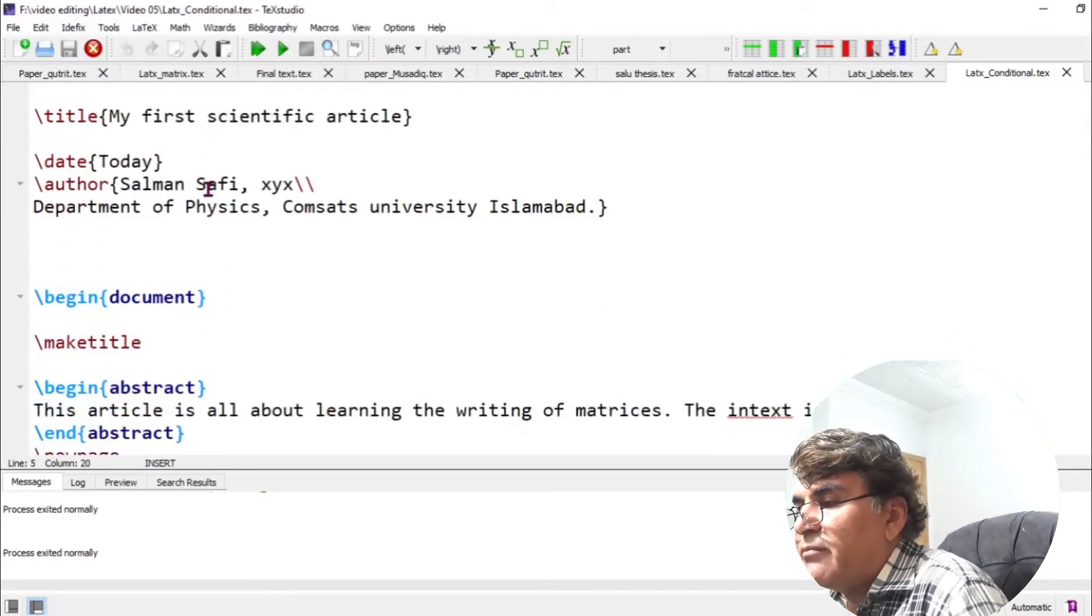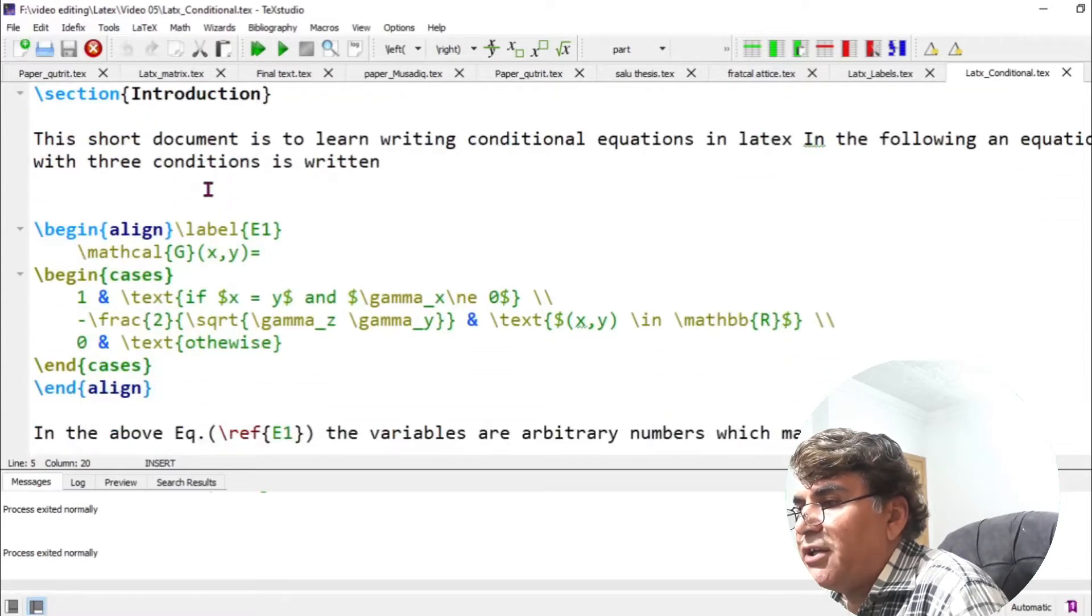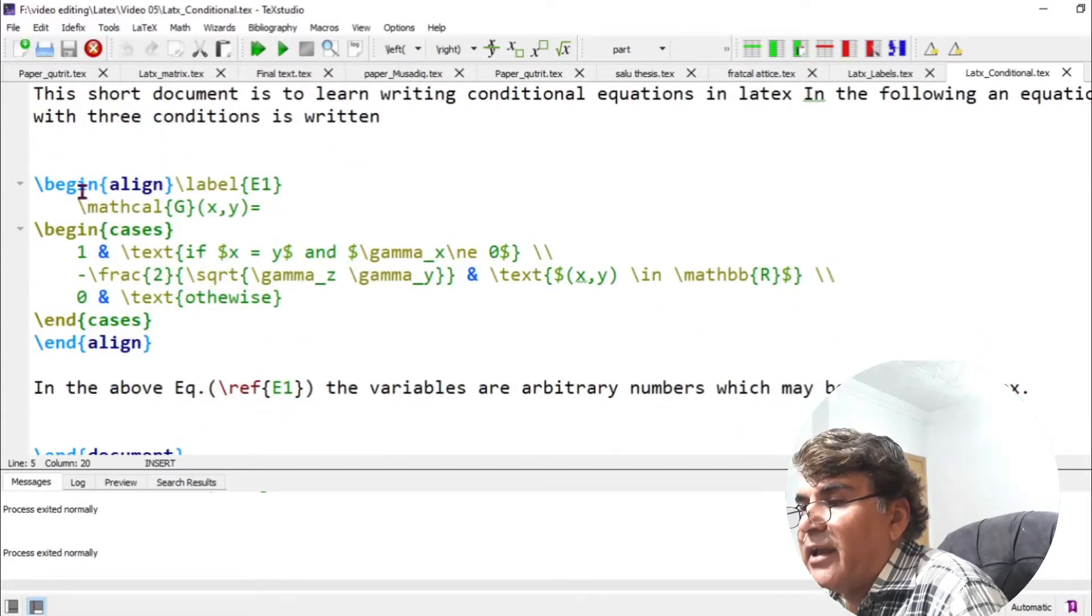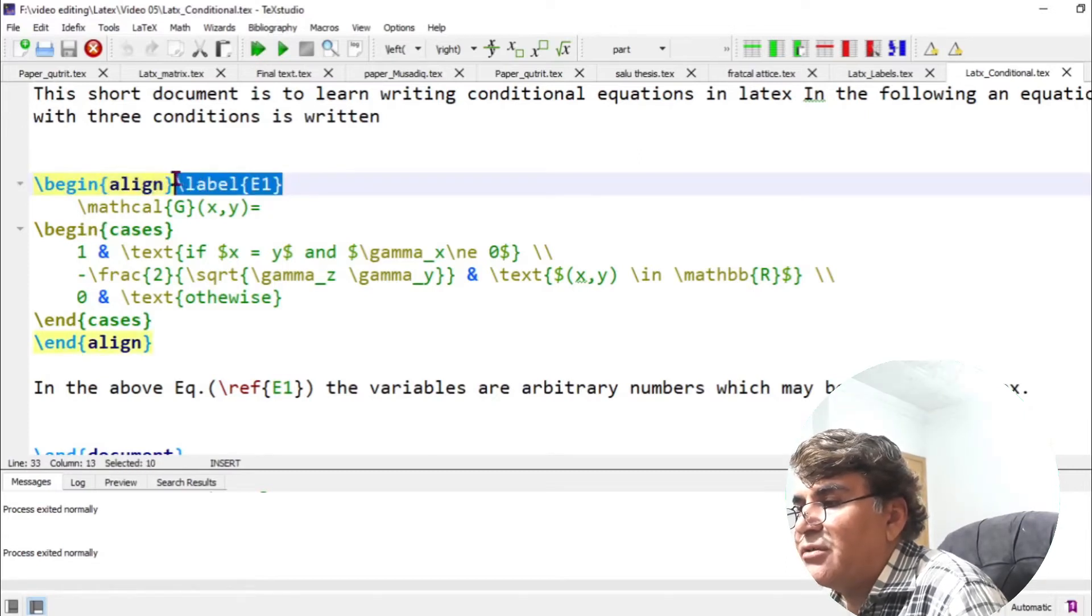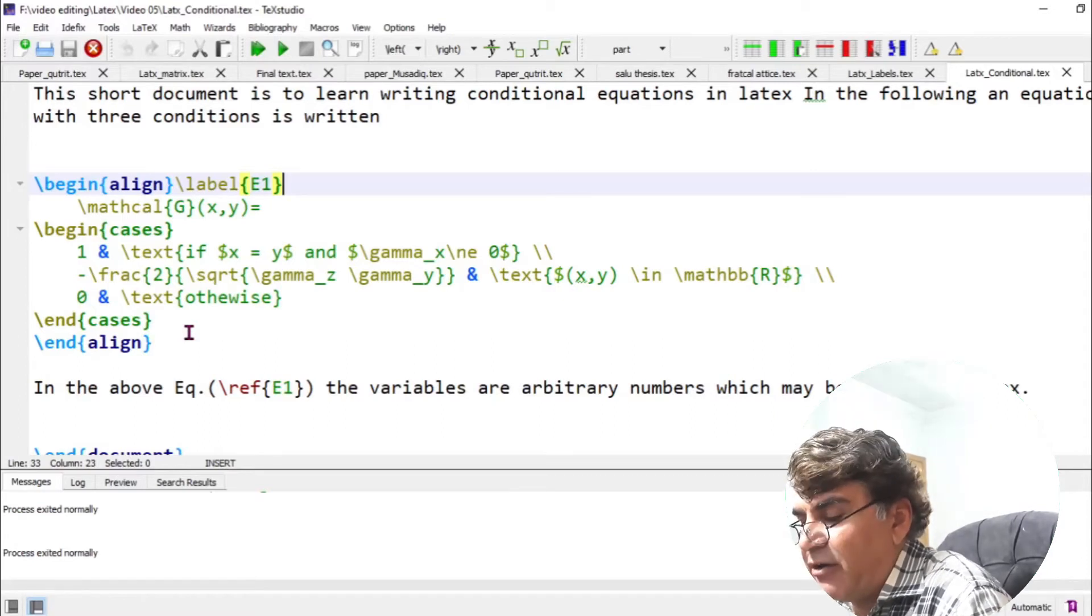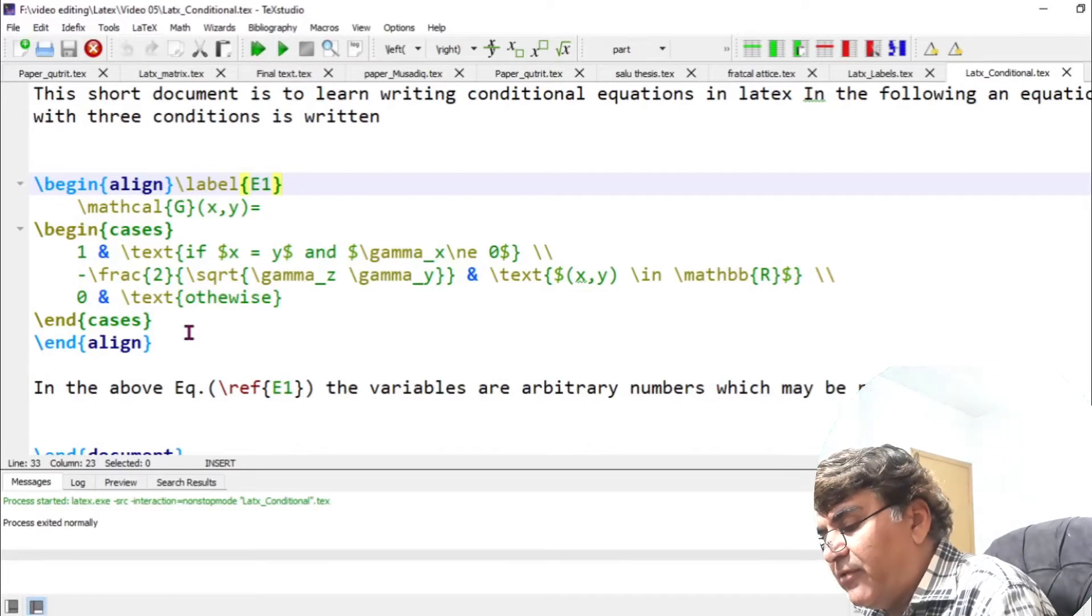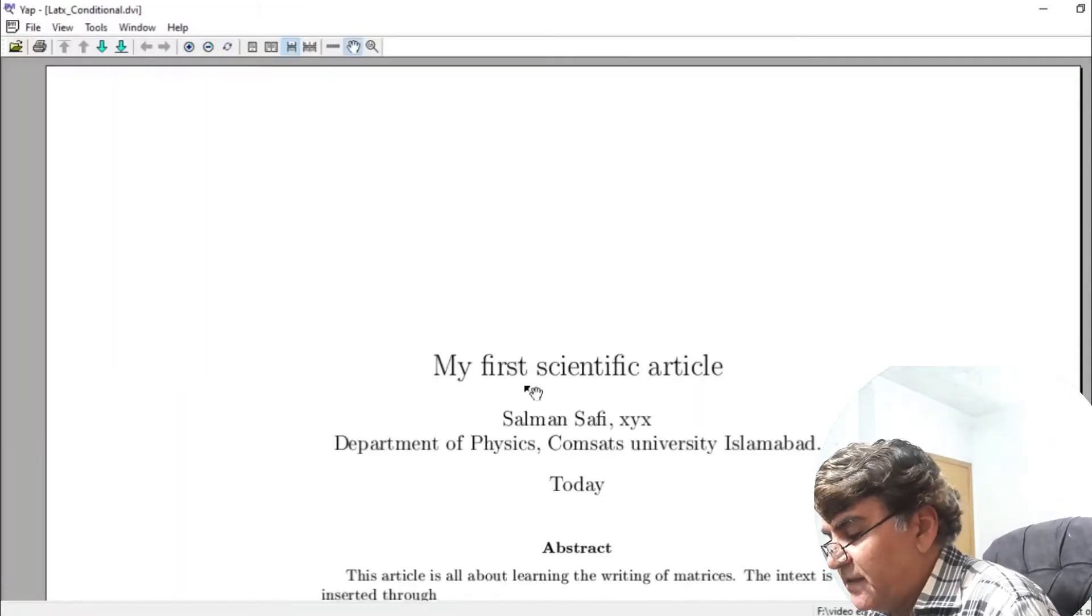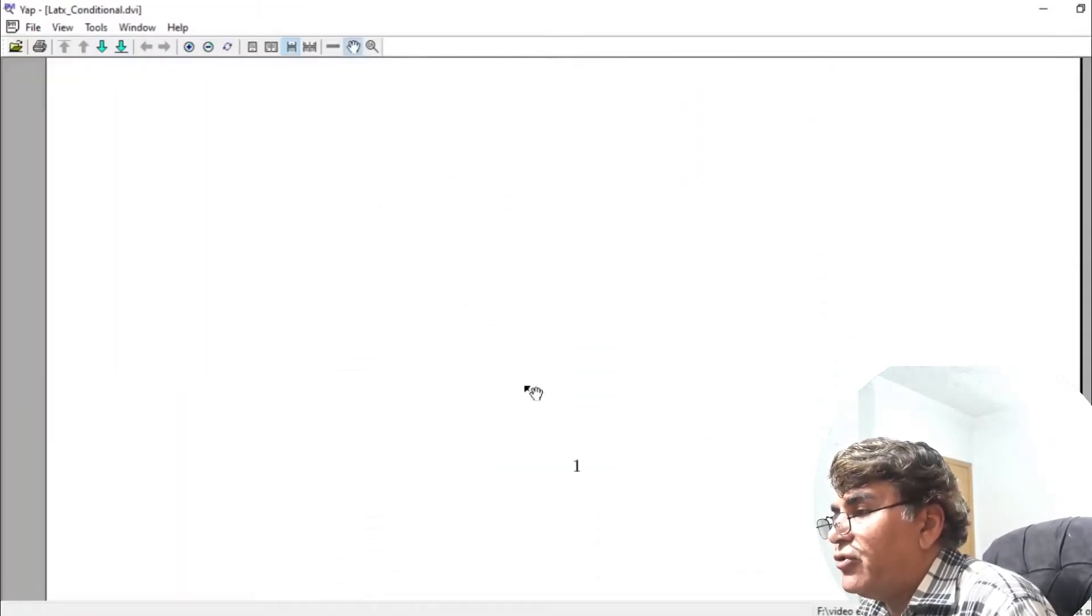I would like to straight away move to writing the conditional equation which I have already built an equation environment using align command and I have added a label to the equation which is E1. Here I have already written the same equation as you saw before. Let me build the document first and see whether this is correctly written or not.